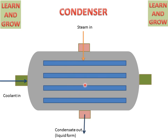When the heated steam comes into contact with these cold tubes, it converts into condensate by giving its latent heat to the cold water. The coolant then exits from the other side.